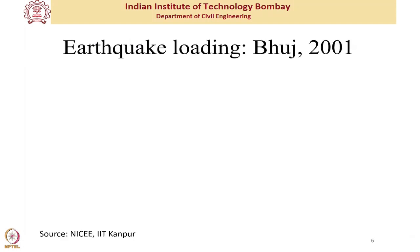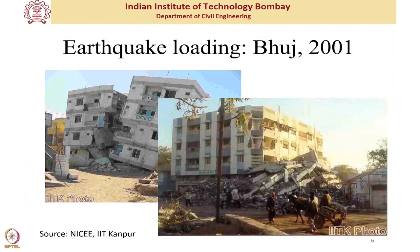I'll show some real-life examples of dynamic loads. First, images from the Bhuj earthquake in Gujarat — buildings designed adequately for vertical loads but not for horizontal seismic loads. Earthquake causes horizontal loading due to ground shaking, and due to inadequate seismic design it led to tremendous devastation and loss of precious lives.